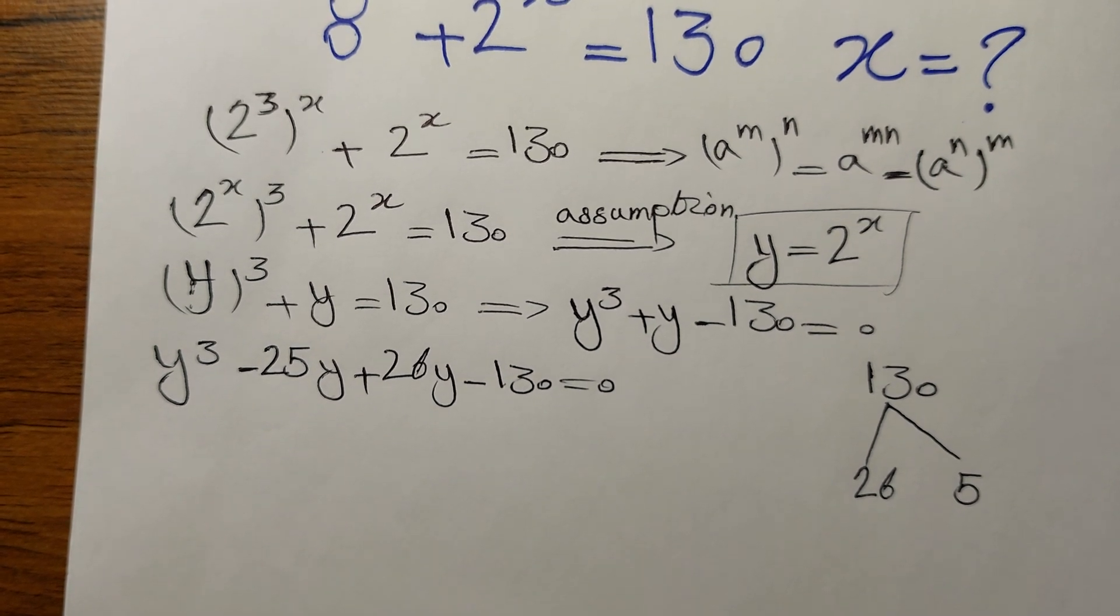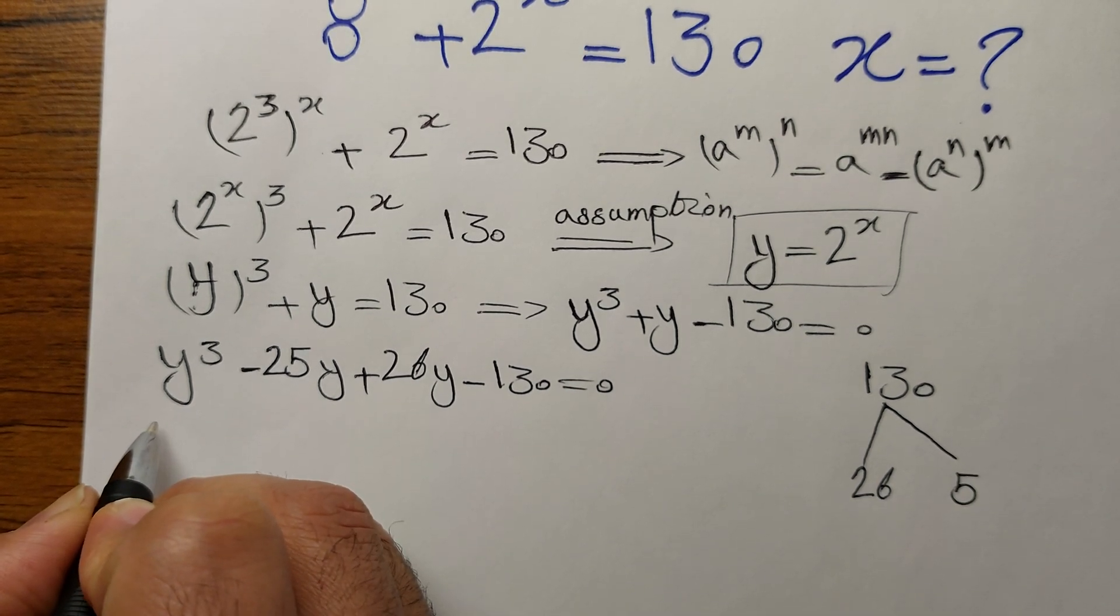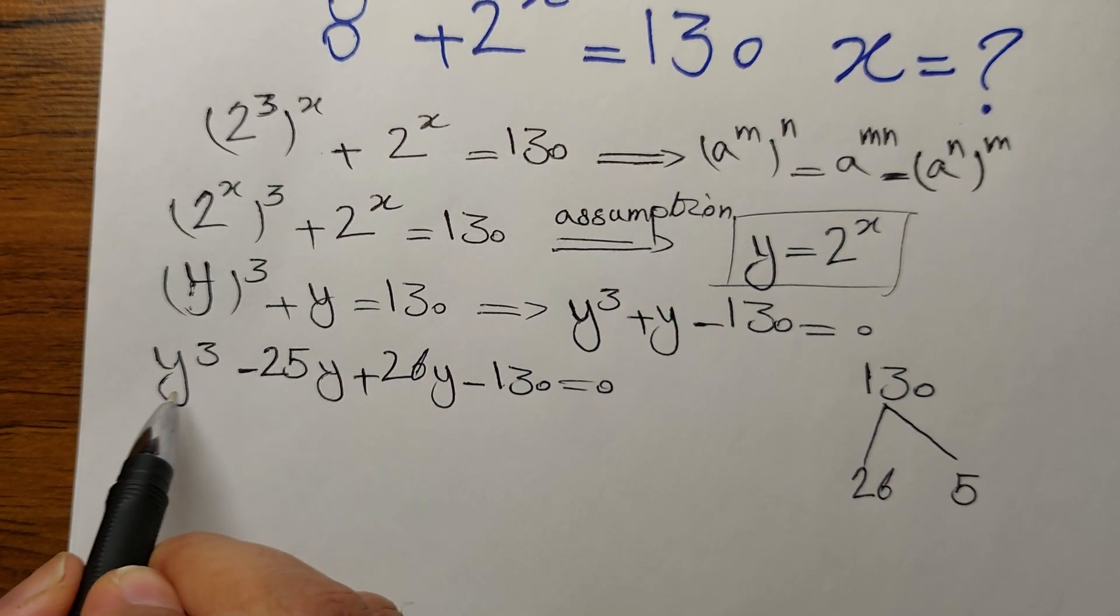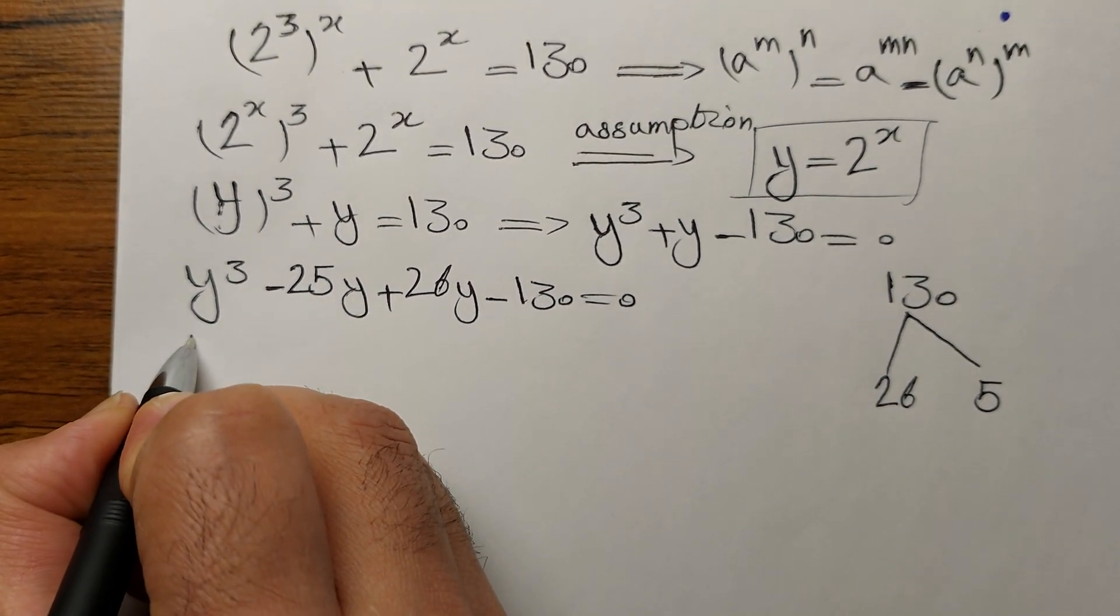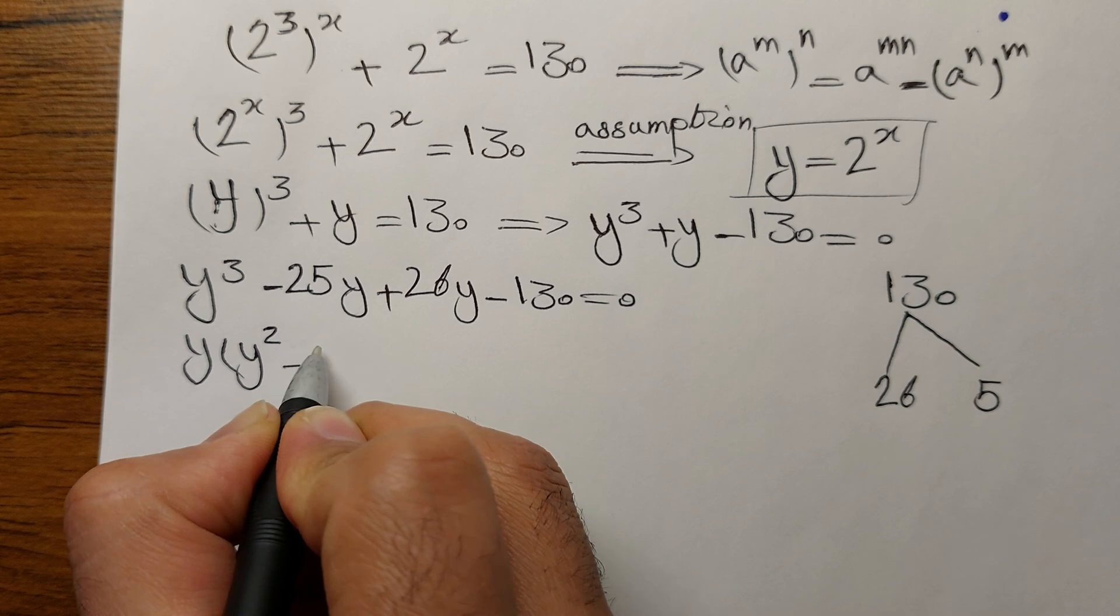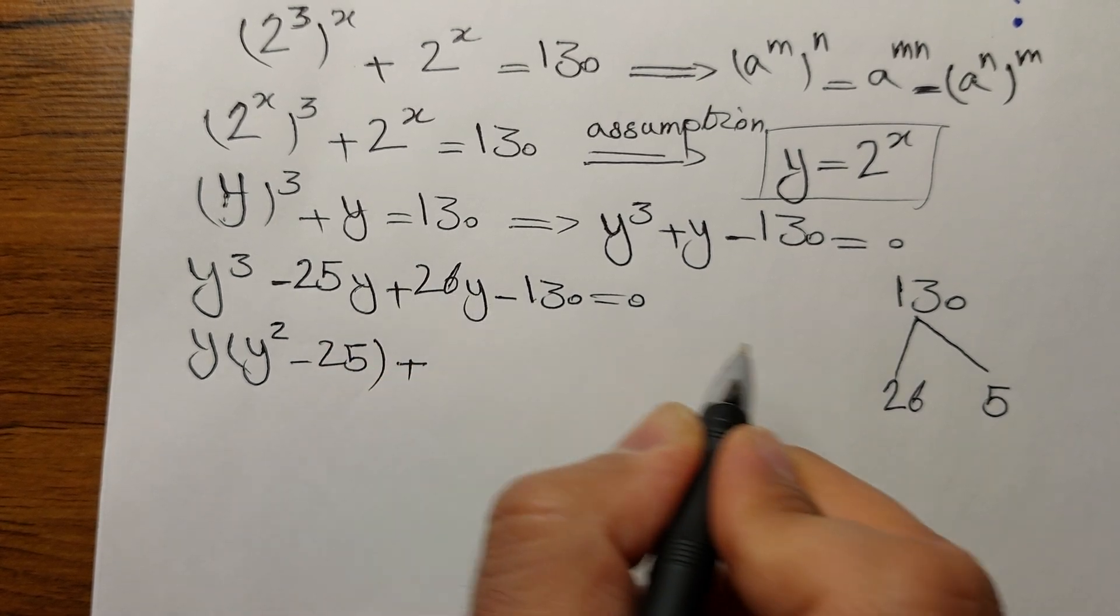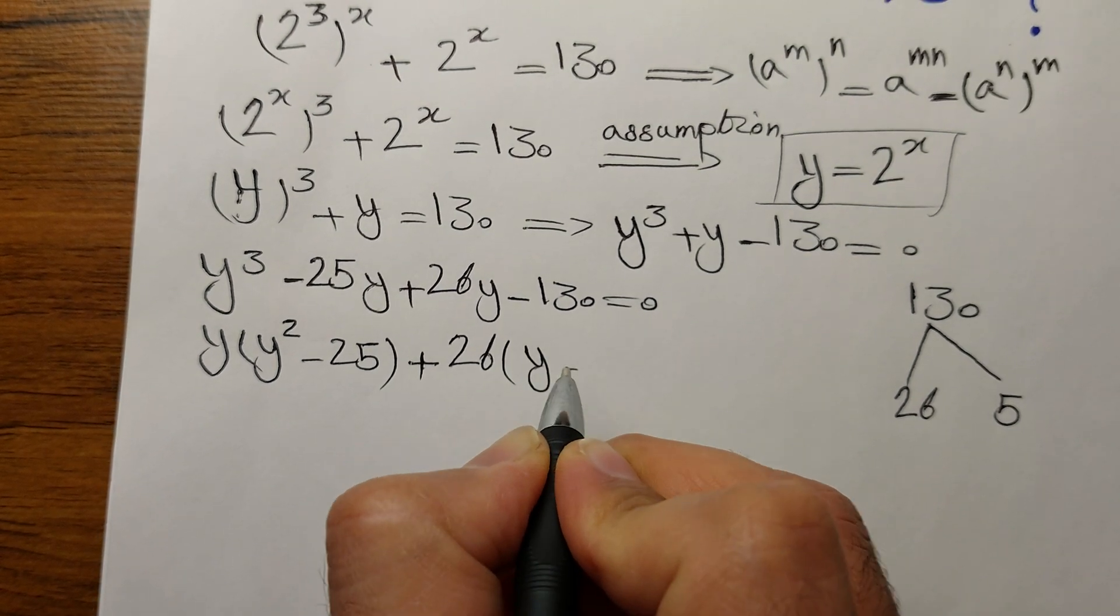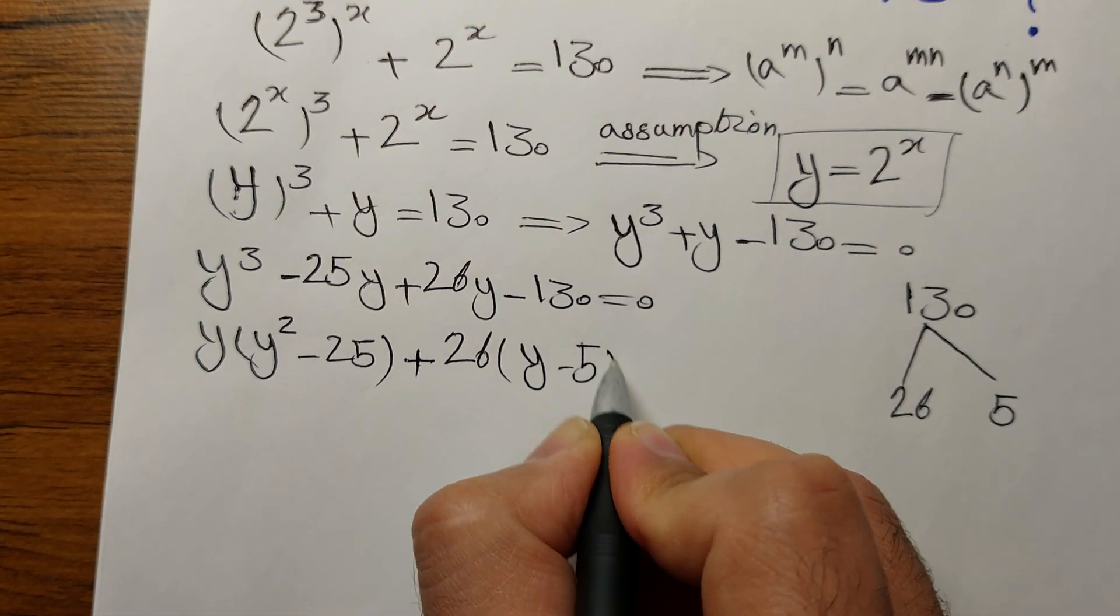Now we need to use identities. But not now. We need to take some factors out at first. From these two terms, we can take a y. I think things are getting a little familiar. Let's take one y out: y times y squared minus 25. Yes, of course, it sounds familiar, this identity. Let's take 26 here. So that's why we chose 26 as the divisor. So 26 times y minus 5.